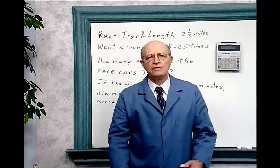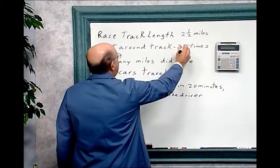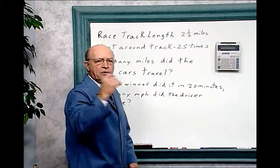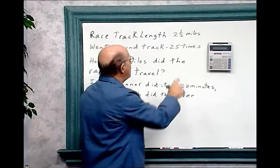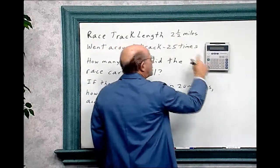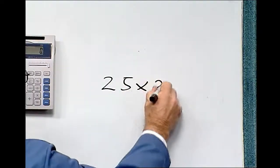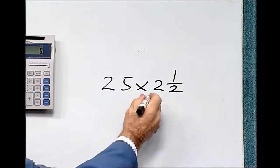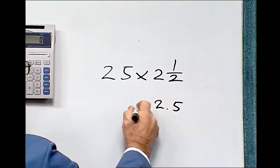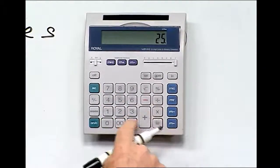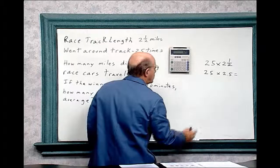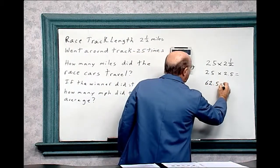If this racetrack is 2 and 1/2 miles long and the racecars go around 25 times, how many miles did the racecars travel? The racetrack length is 2 and 1/2 miles, and the racecars went around the track 25 times. If they went around 25 times and the length is 2 and 1/2 miles, then we have to multiply 25 times 2 and 1/2. We should know by now that 2 and 1/2 is 2.5. So we multiply 25 by 2.5, and the racecars traveled 62.5 miles.